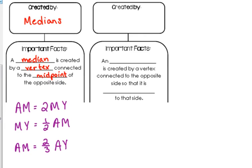And then we could also talk about MY the same way. MY would be one third of the entire median AY. Now we could apply that to any of those medians. We could talk about BM, MZ, and BZ. And we can talk about CM, MX, and CX as well. Those relationships apply to all of the medians in a triangle, when you're talking about the centroid cutting those medians.